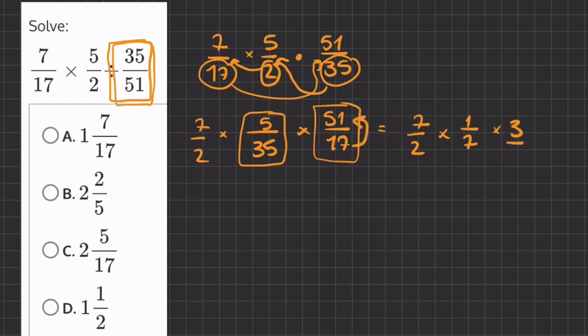Alright, so now we can multiply our fractions straight across. So 7 times 1 times 3 is going to be 21. And 7 times 2 is going to give us 14.